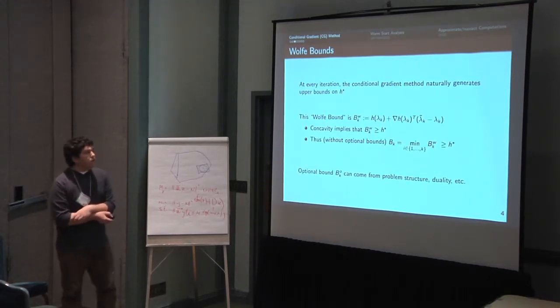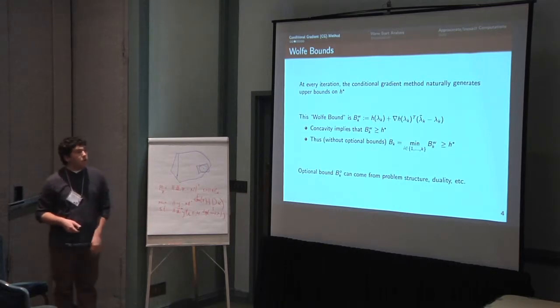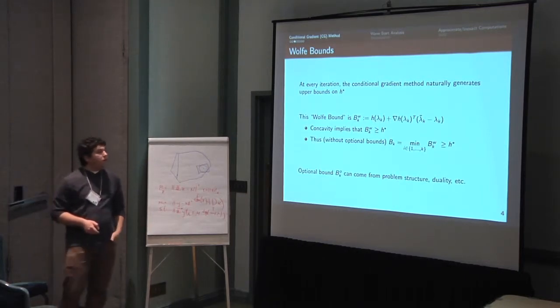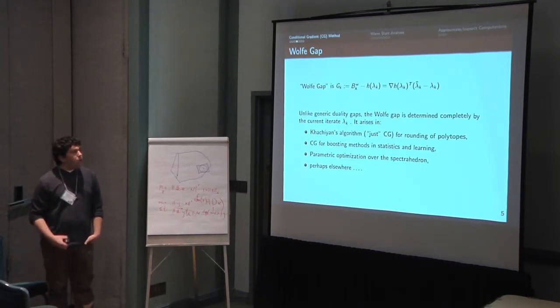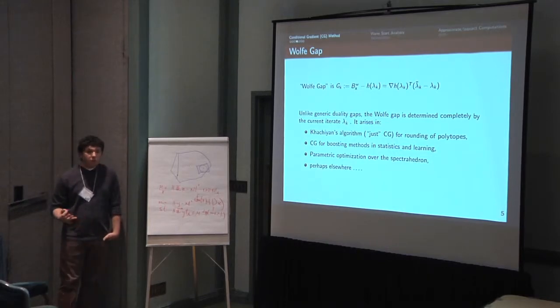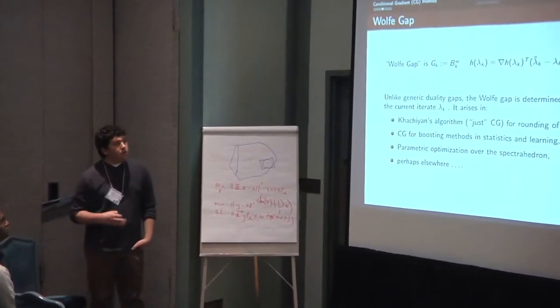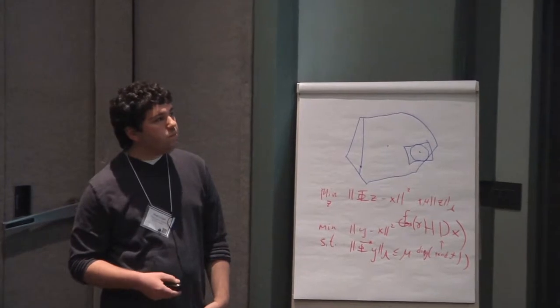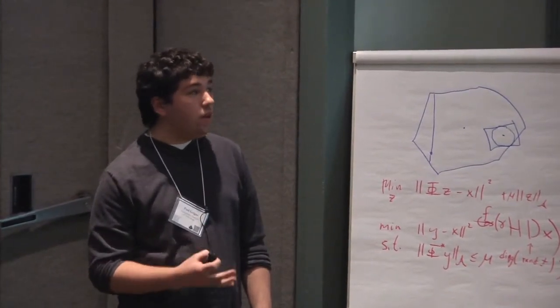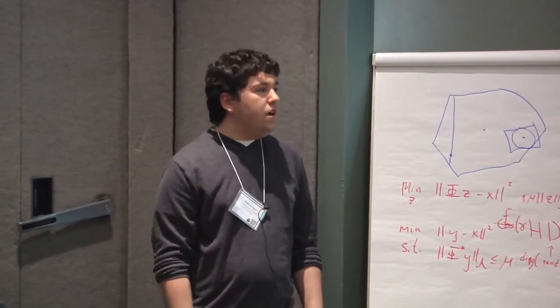So just to speak a little bit more about these bounds, this upper bound that we get at every iteration is just coming from concavity of the function. And at every iteration we're getting an upper bound, so we can keep updating these to get better and better upper bounds. We can also sometimes compute other upper bounds through duality structure, depending on the problem. The Wolf gap is basically you take your current upper bound, so not the best one, but the one you got from the linearization at your current iteration, and you subtract the objective function at the current iterate. So this is like a duality gap, but it's not just a generic duality gap, because actually the upper bound is really related to the H of lambda K very explicitly. And this special relationship is exploited in a number of applications by a number of people.